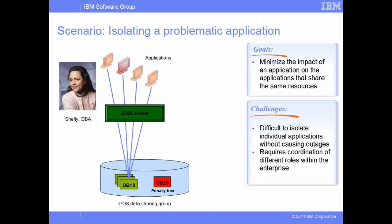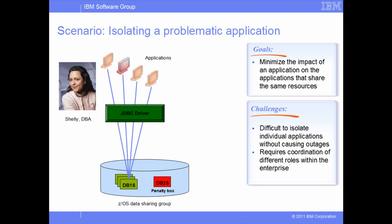In this scenario, Shelly faces the following challenges. First, it is difficult to isolate an application or parts of an application as required while not affecting other applications that are performing well. Moving connections and transactions between data sharing members often causes application outages. Second, changing locations is a manual, cumbersome, and error-prone process that requires coordination of different roles across the enterprise, including application or system programmers, DBAs, and system administrators.